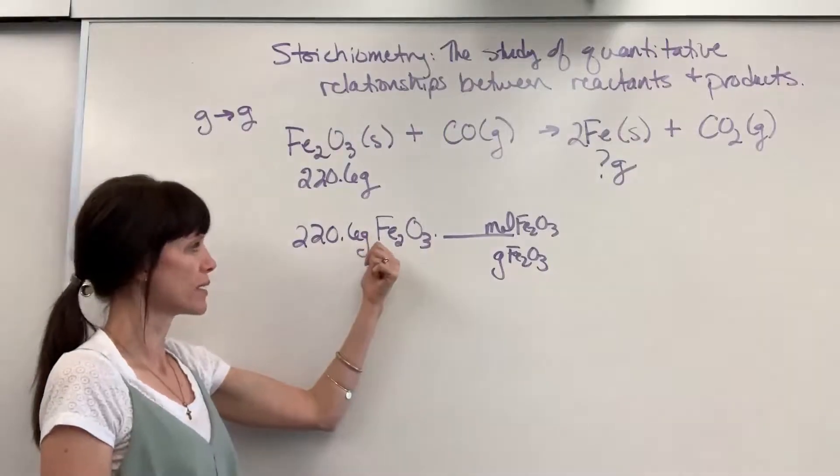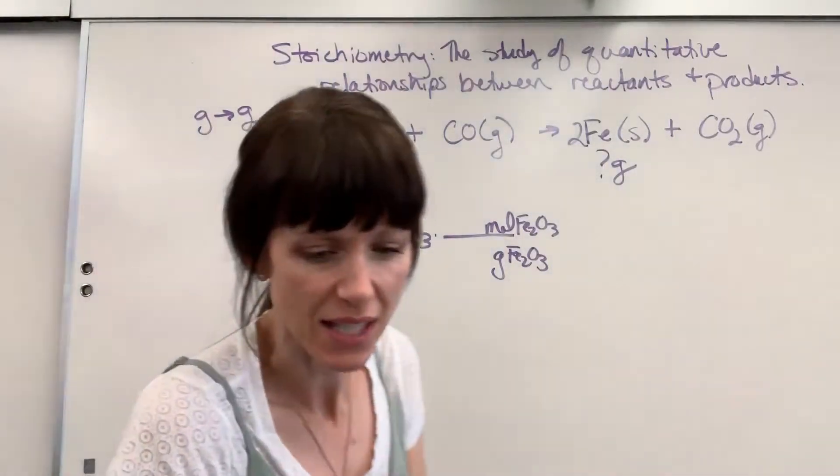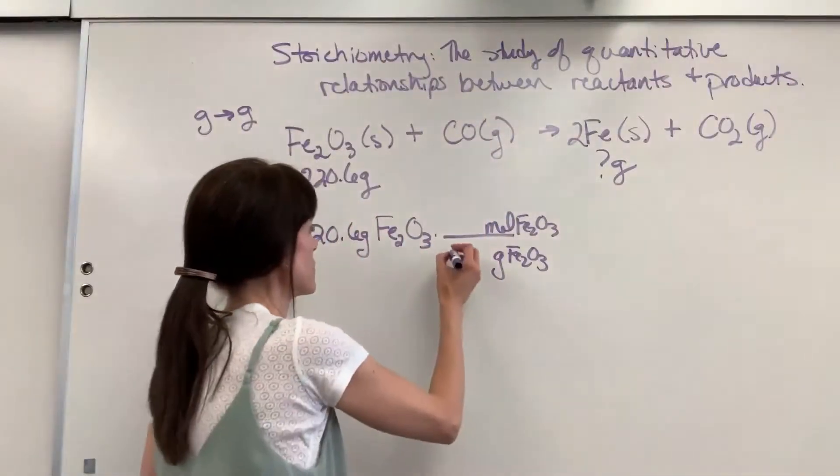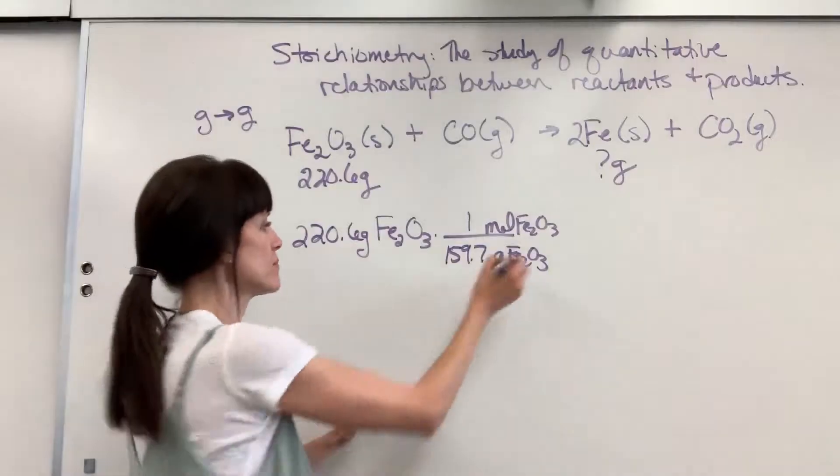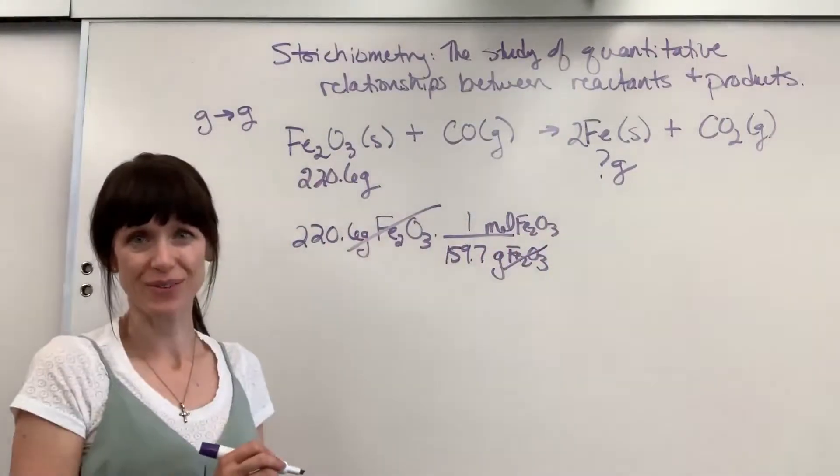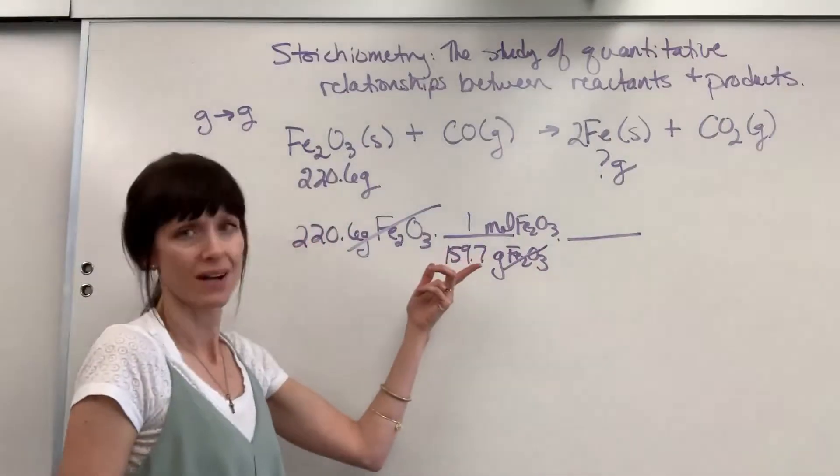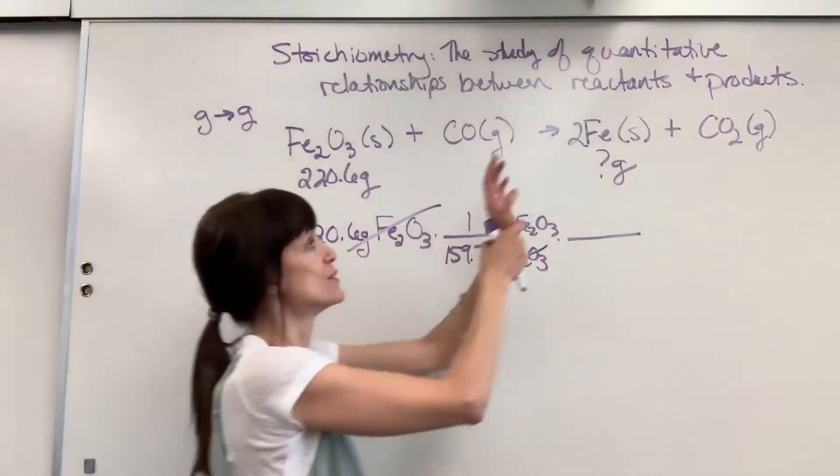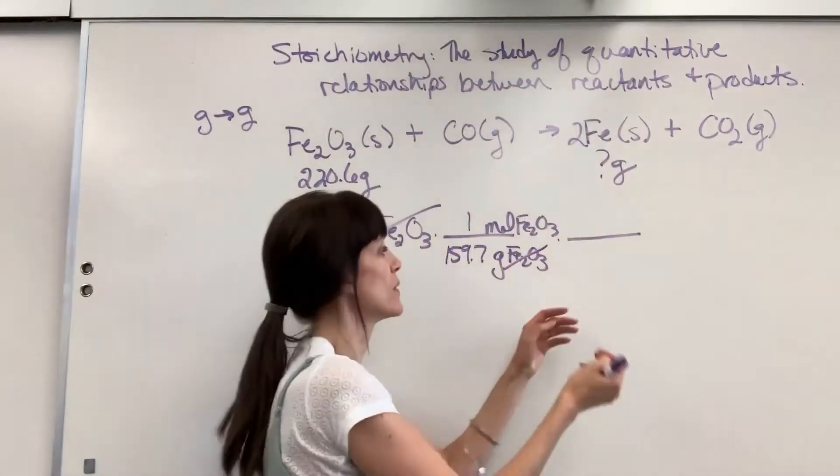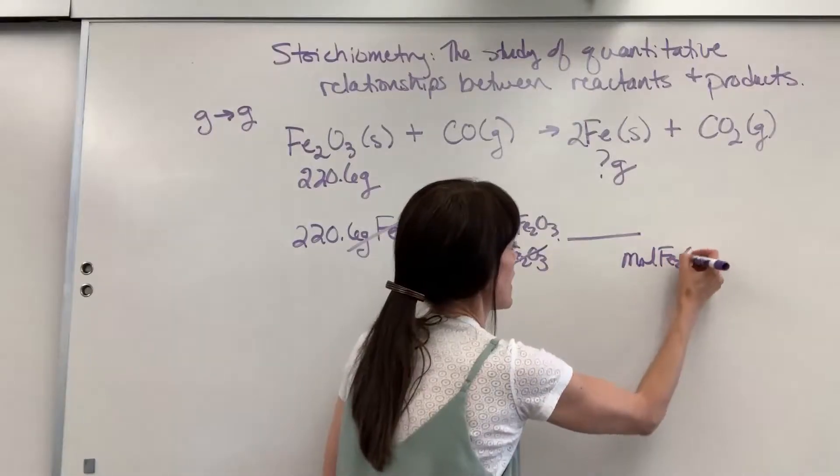If you add up two irons 55.85 and three oxygen 16, that is 159.7 grams for every one mole. Notice grams of that iron 3 oxide cancels. I now have moles of the iron 3 oxide. I want to go from iron 3 oxide to the moles of the iron. So let's cancel out moles of iron 3 oxide.